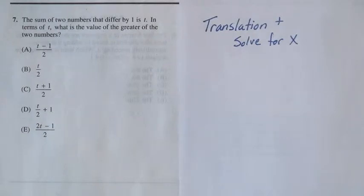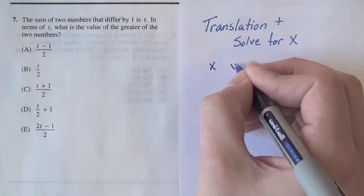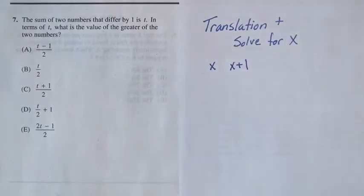We want the sum of two numbers that differ by one. Now the natural choice for these two numbers would be x and x plus one. Those are two numbers that differ by one.